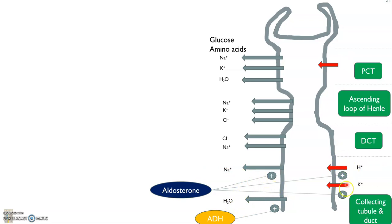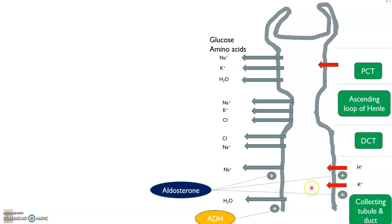The red ones in the diagram are secretions, and the grayish-green ones are reabsorptions. Hydrogen is being secreted, and sodium and water are being reabsorbed. Aldosterone acts here — it will promote the reabsorption of sodium and also the secretion of hydrogen. Together with sodium, water will follow as well.